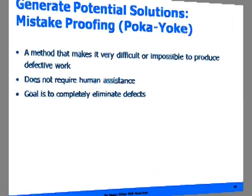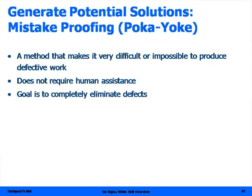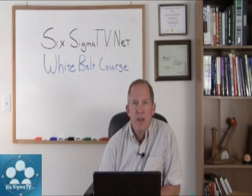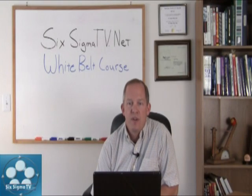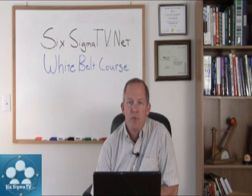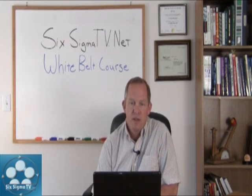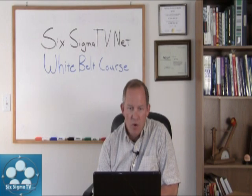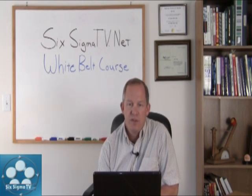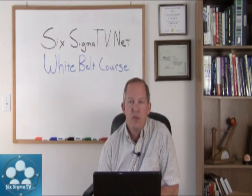Mistake proofing is a method that makes it difficult or impossible to produce defective work — dummy proofing it. What we try to do is minimize the amount of human assistance required within a process. Human beings are only capable of about four sigma, so in order to get beyond four sigma, you need to start automating and removing the human factor in order to cross into the five and six sigma world. The goal is to completely eliminate defects, and mistake proofing is one potential way to generate solutions.